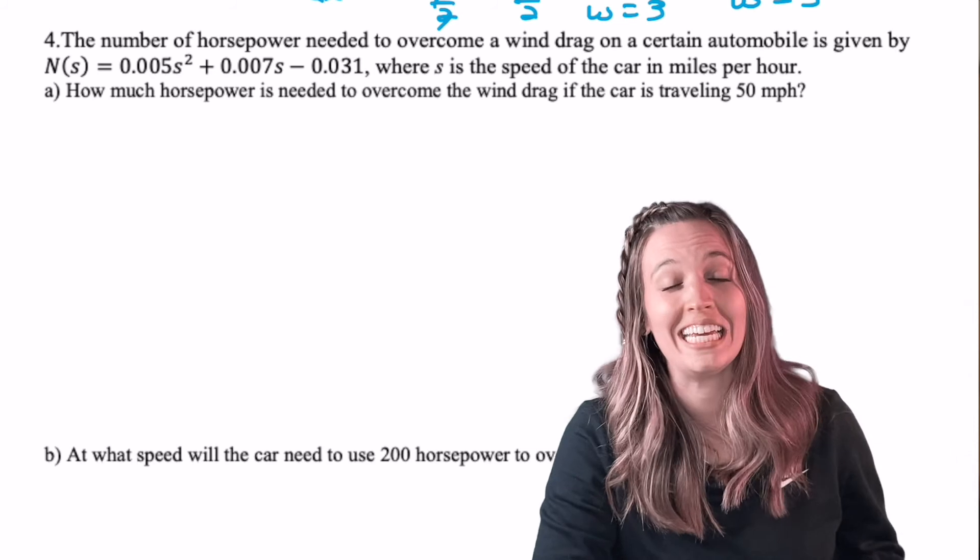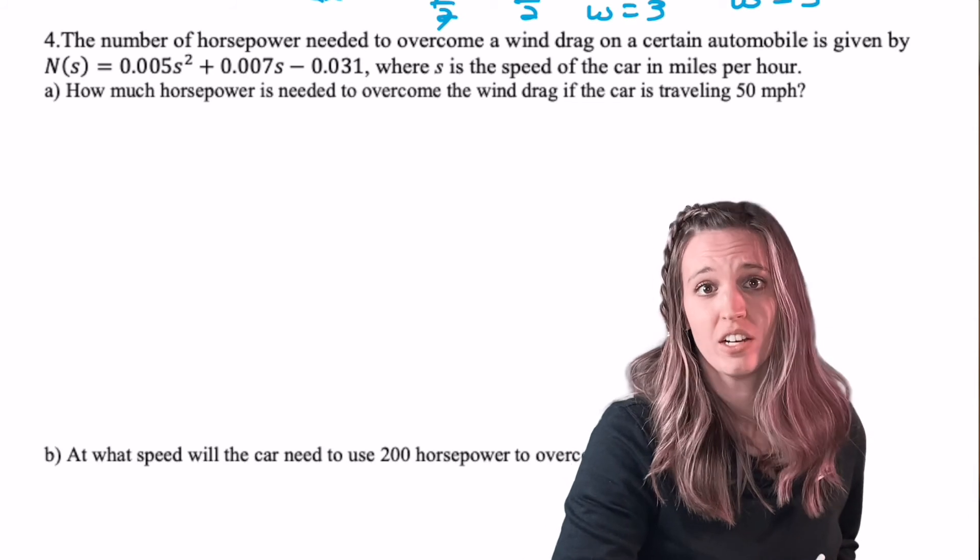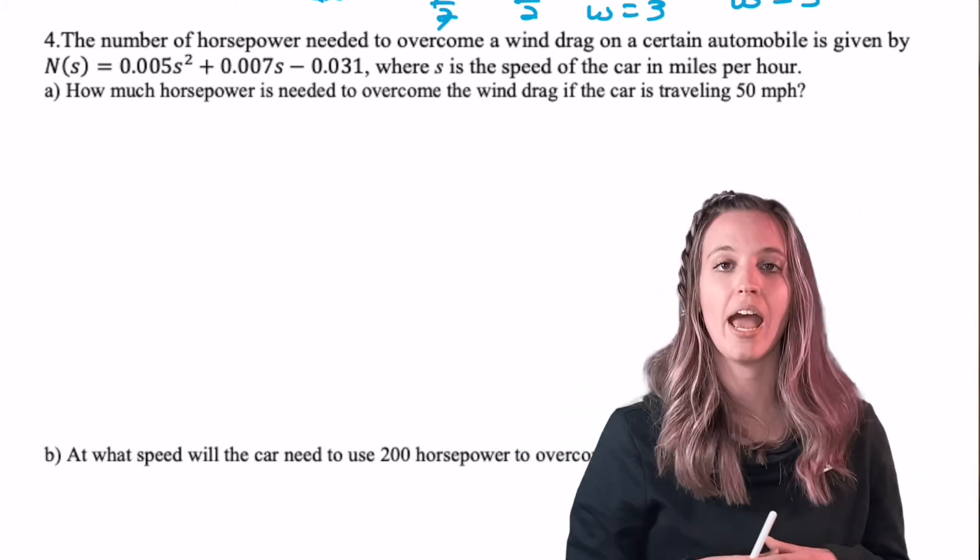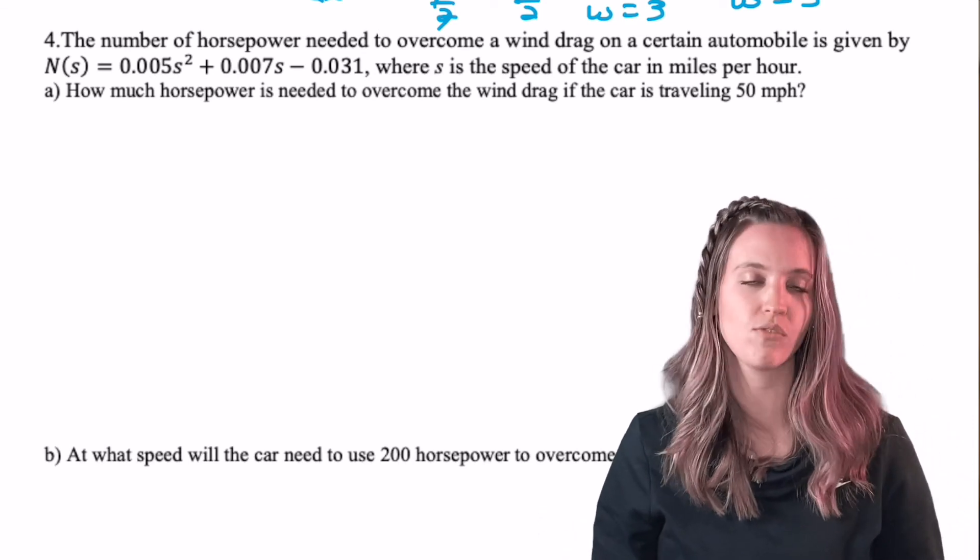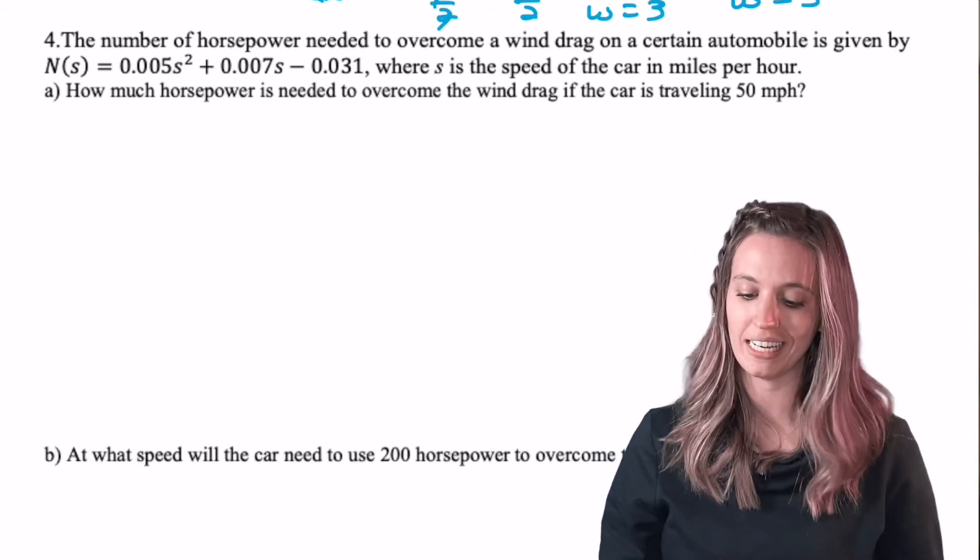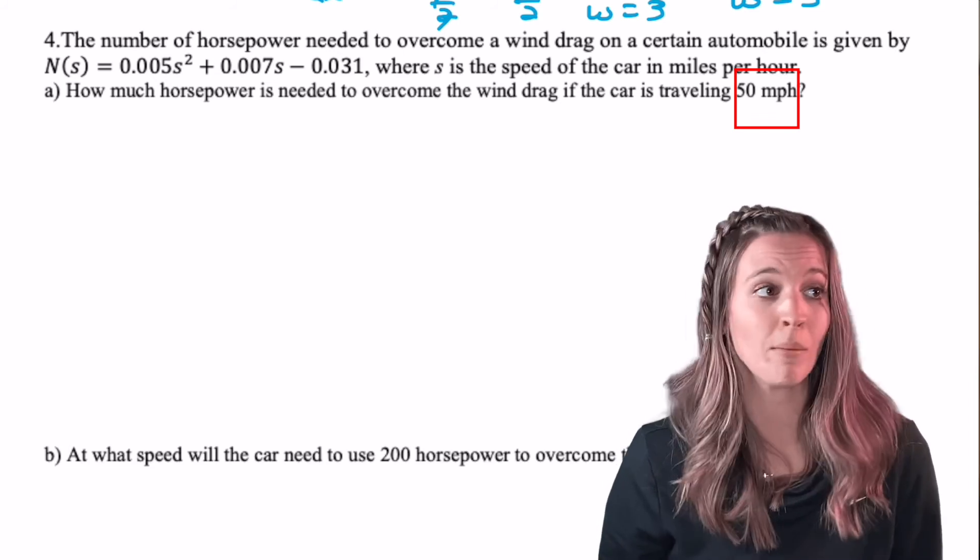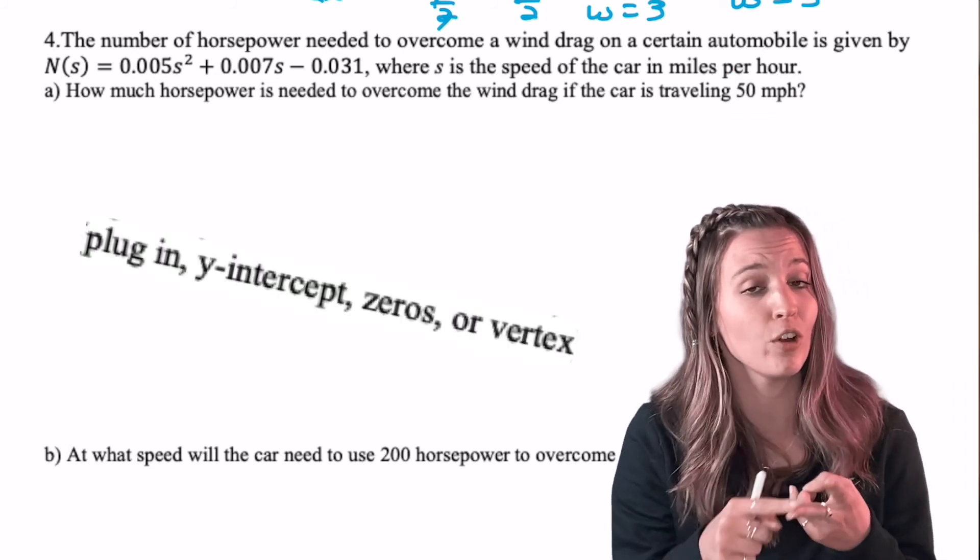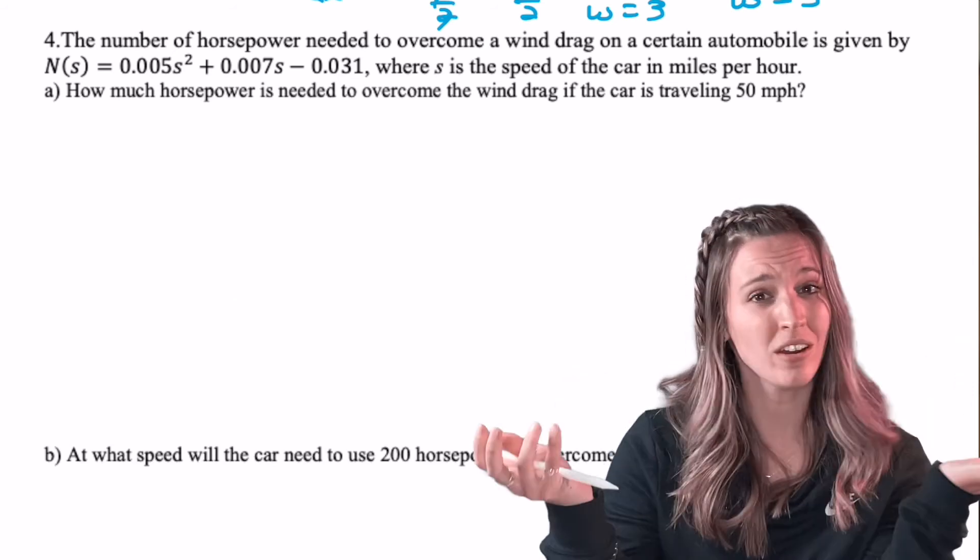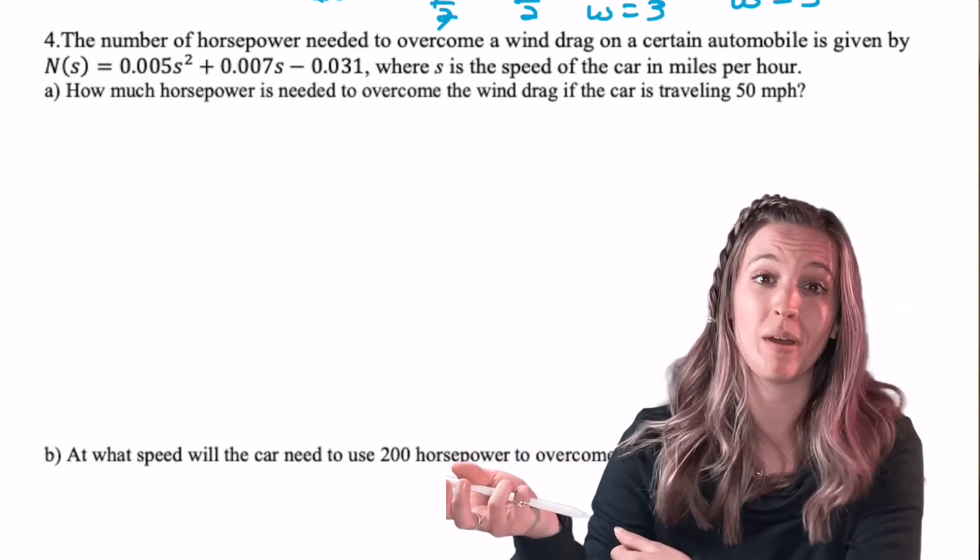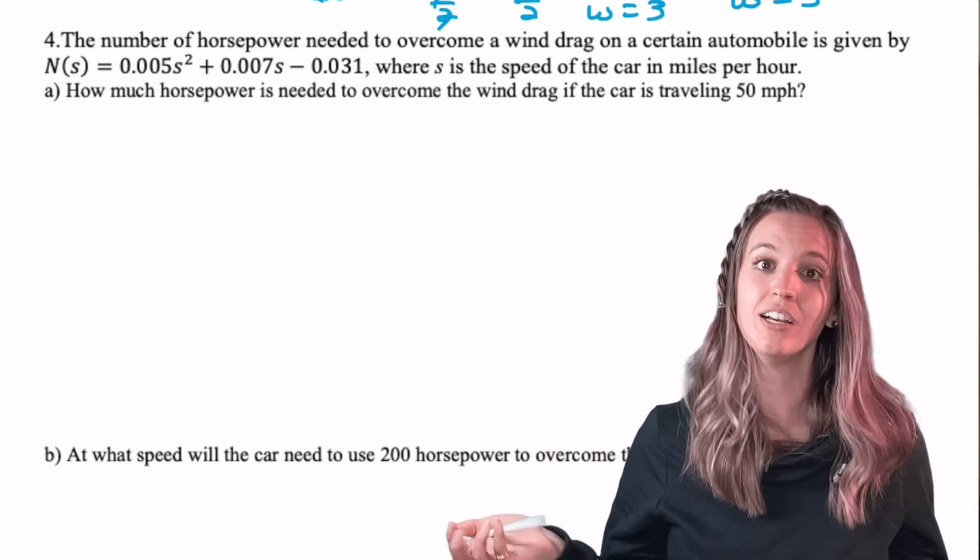The number of horsepower needed to overcome a wind drag on a certain automobile is given by this quadratic where s is the speed. So s is our input value and the number of horsepower to overcome the wind drag is our output. So let's see what this first problem is asking us for. It says, how much horsepower is needed to overcome the wind drag if the car is traveling 50 miles per hour? So what am I looking for here? Am I looking to plug in? Am I looking for the vertex? Am I looking for zeros? Or am I looking for the y-intercept? Think about it. I want to figure out the horsepower for when the speed is 50 miles per hour. Well, speed is my input value. So if I'm inputting something, that's going to be plug in.